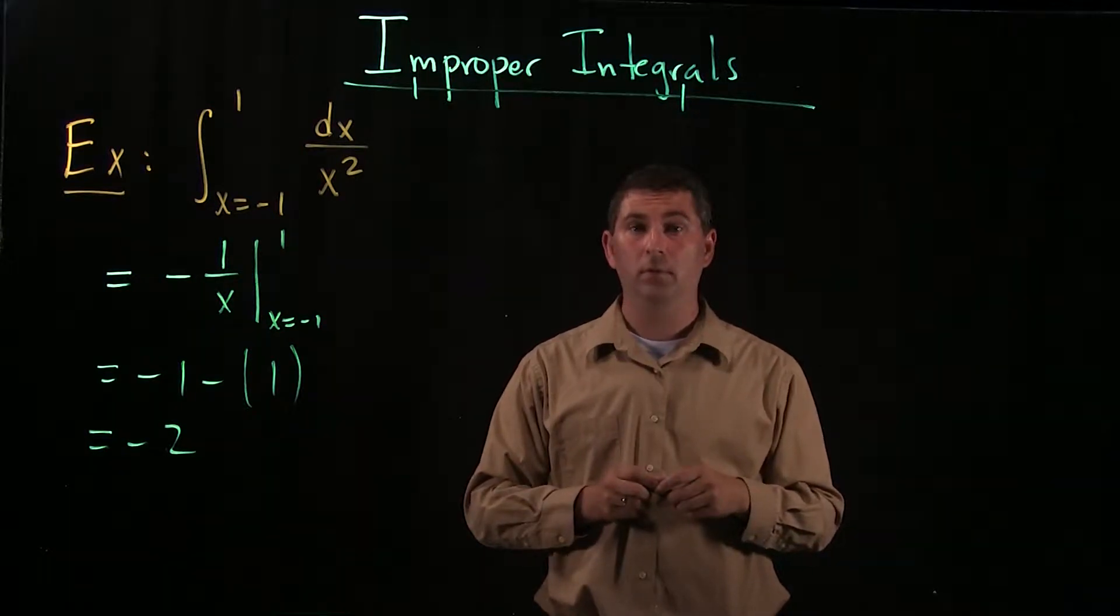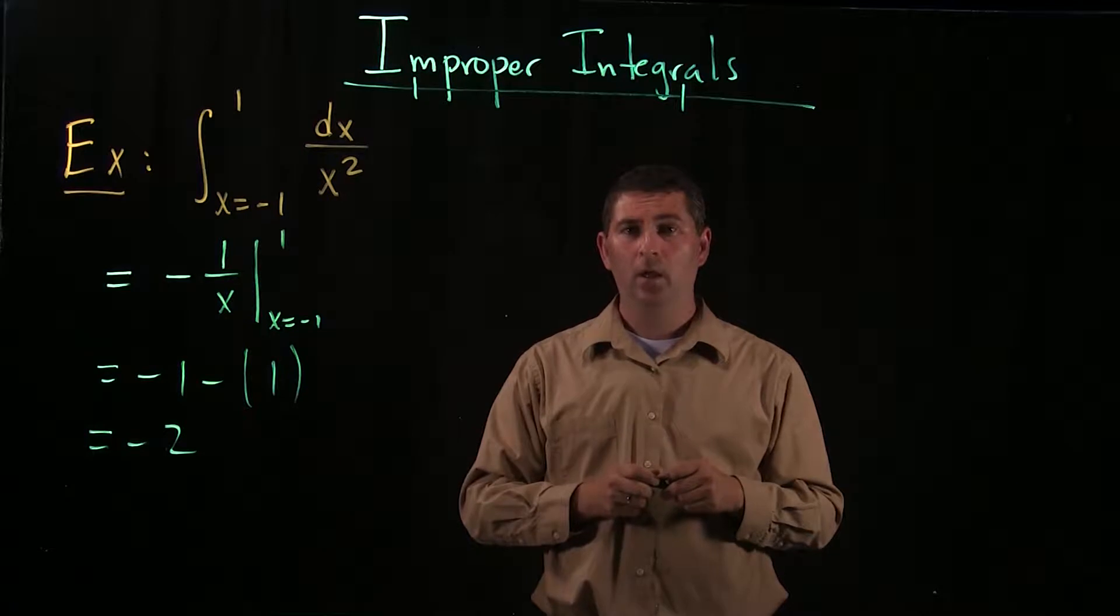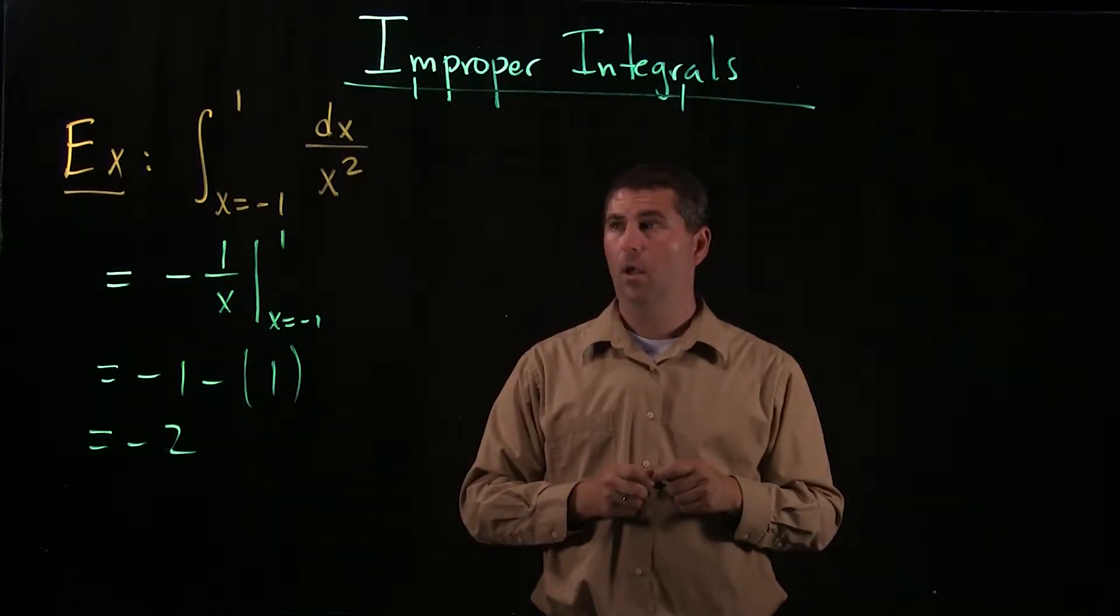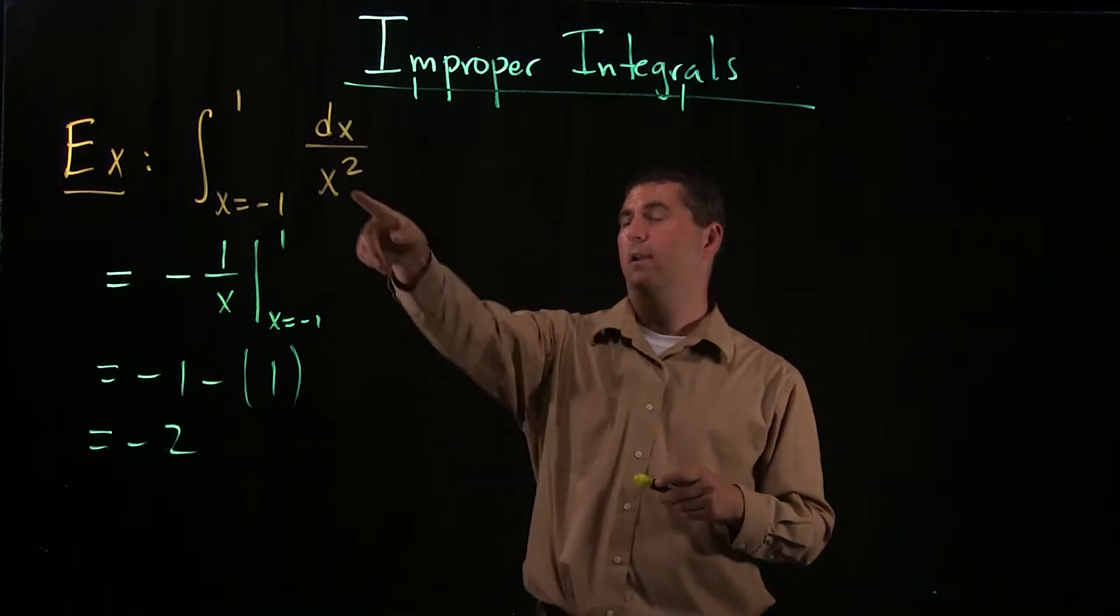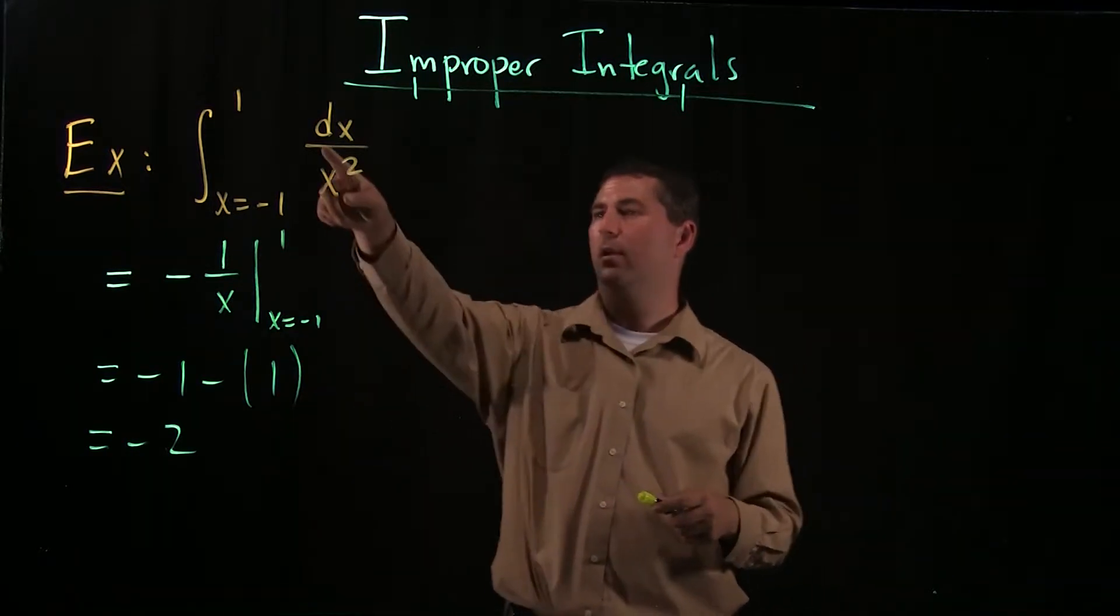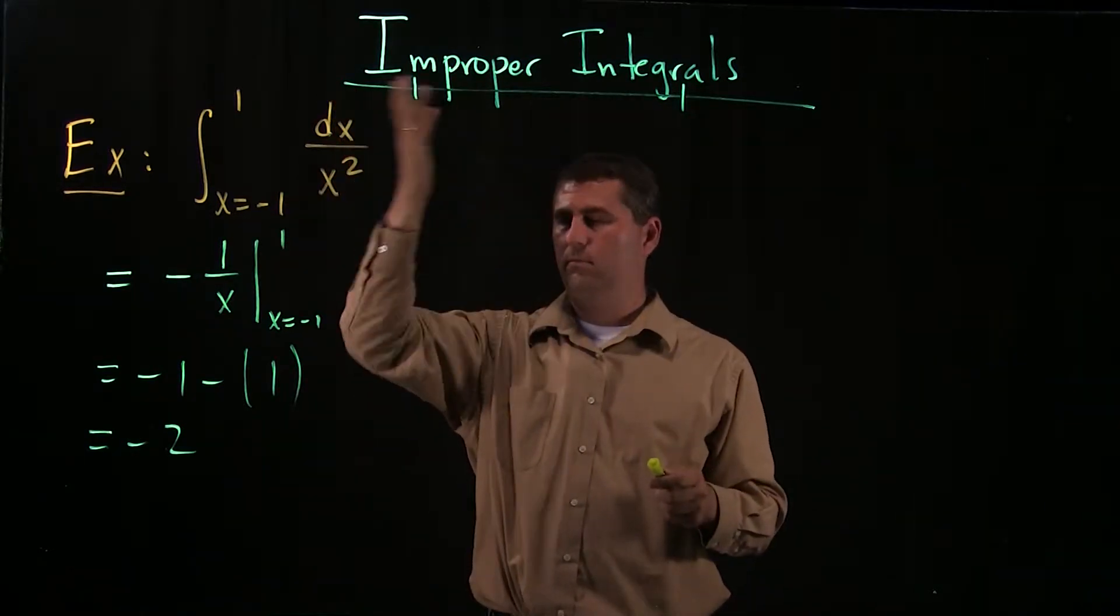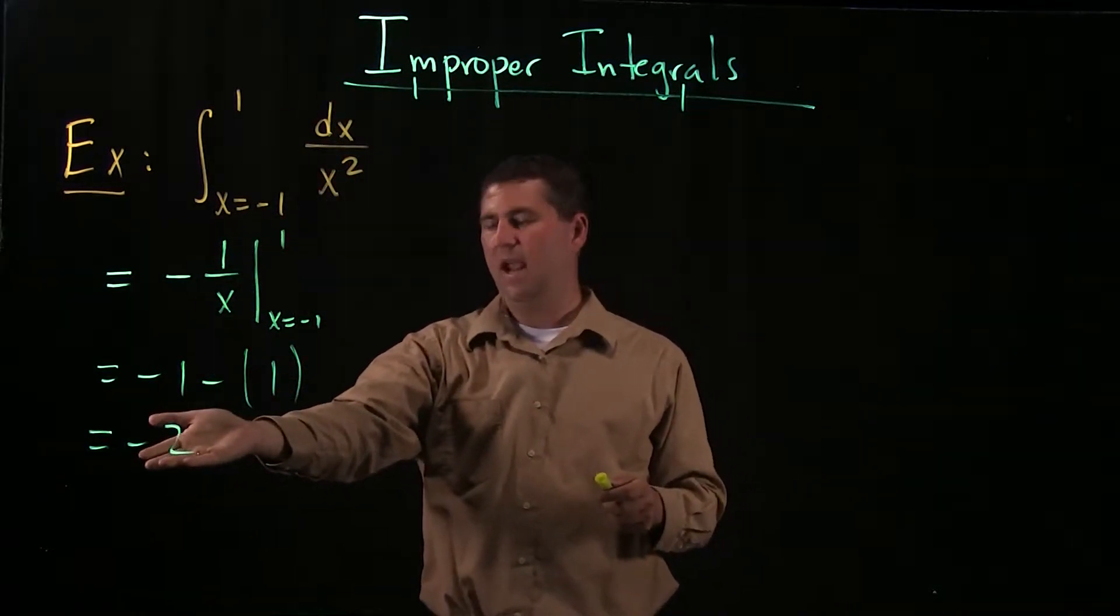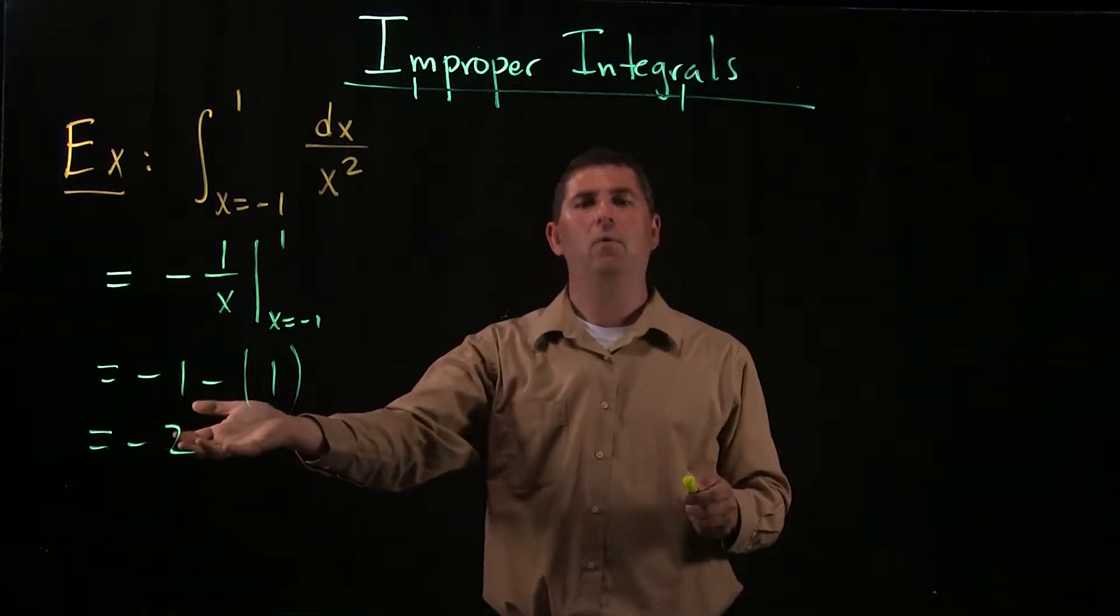Okay fine, I evaluated the integral, I get negative 2. What? You don't think it should be negative 2? Why not? Positive? 1 over x squared is positive. Oh gosh, you're right. 1 over x squared is always positive. You shouldn't get a negative answer when you integrate a positive function. What went wrong here?